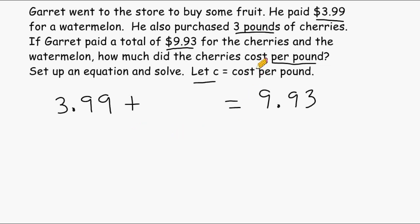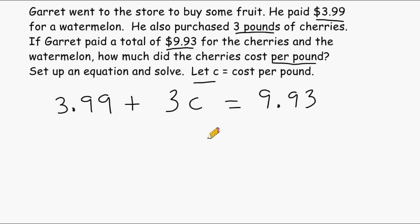It is given that Garrett purchased three pounds of cherries, but we do not know the cost per pound. But if we did, we know we would simply multiply that cost per pound by three. We are letting the variable C represent the cost per pound. So we are going to set up an expression equal to the total cost of the cherries, which can be found by multiplying three by C. We add that to the cost of the watermelon, giving us an equation we can solve by isolating C.